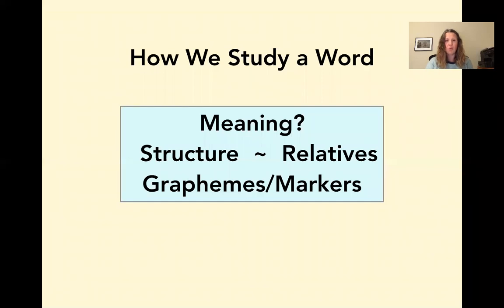First, let's remember what we do when we study a word. And the first thing that we always do is think about the meaning of a word. What does it mean? We know that the base holds the meaning and the meaning is the key to unlocking the structure of the word. So we first consider the meaning and then we look at the structure. Can we find any prefixes or suffixes? Are there any other words that are related that might help us understand? And then finally, we look at the different graphemes that spell the word and maybe some marker letters.